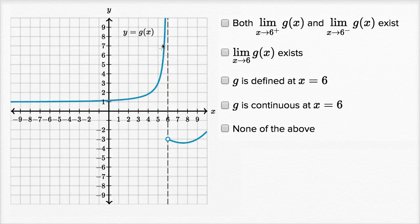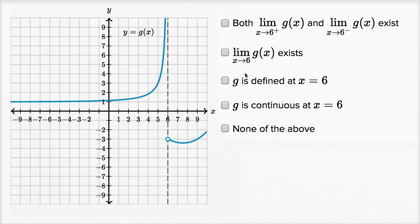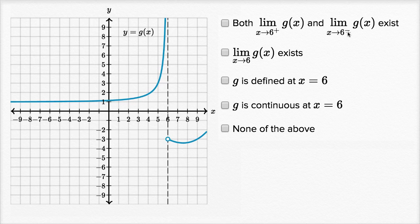We have the graph of y equals g of x right over here. I want to check which of these statements are actually true and check them off. I encourage you to pause the video and see if you can work through this on your own. So the first statement says both the limit of g of x as x approaches six from the right-hand side and the limit as x approaches six from the left-hand side of g of x exist.